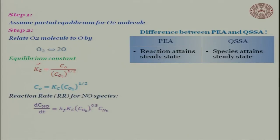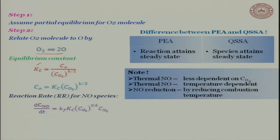What is the difference between partial equilibrium (PA) and quasi-steady-state (QSS)? In PA, a reaction attains a steady state; in QSS, a species attains a steady state — that is the difference. This example we have considered is thermal NO. Thermal NO, or NO formation due to high temperature, is less dependent on concentration of O2 because it appears with power 1/2, so it is less sensitive to O2. It is strongly dependent on temperature — hence we call it thermal NO. NO formation can be reduced by reducing the combustion temperature.